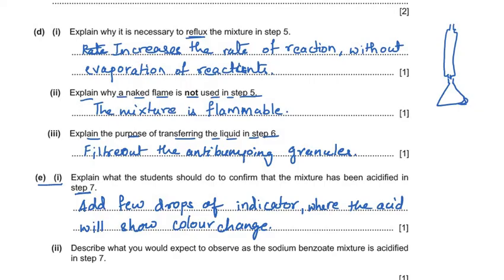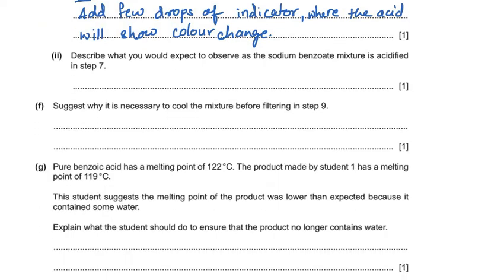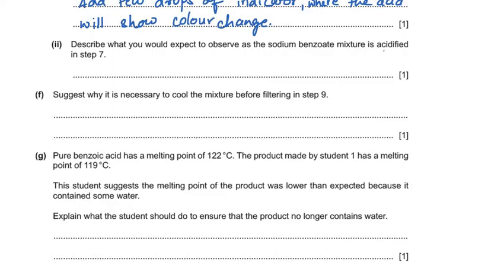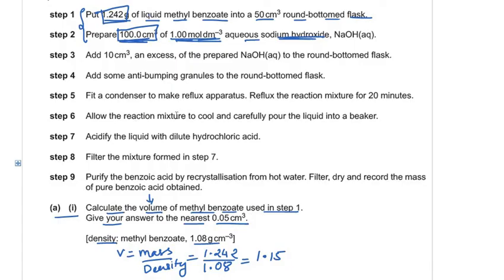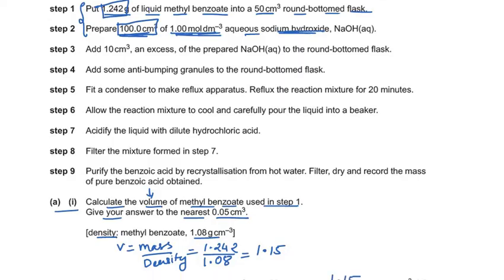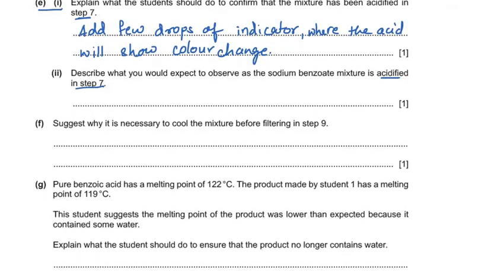Question 1e2 asks what we would expect to observe as the sodium benzoate mixture is acidified in step 7. On adding dilute hydrochloric acid, the sodium benzoate salt converts to benzoic acid. Since benzoic acid is less soluble in cold water, a precipitate will be seen forming upon addition of the acid.